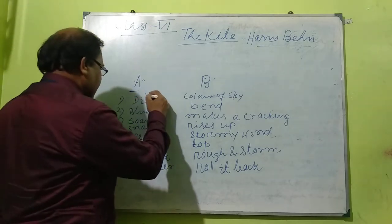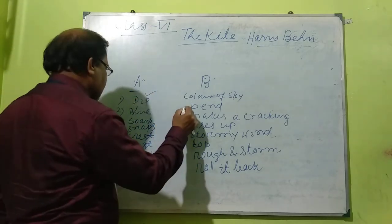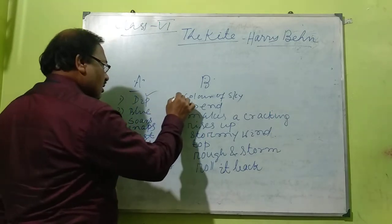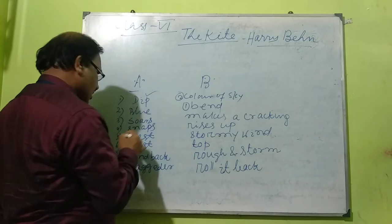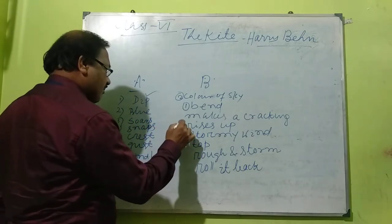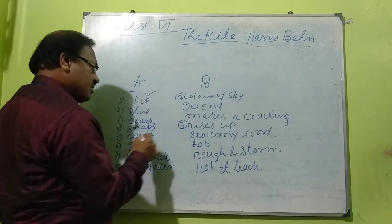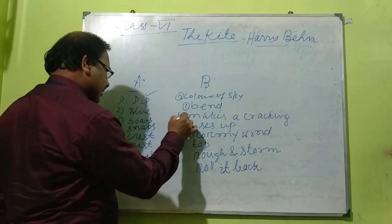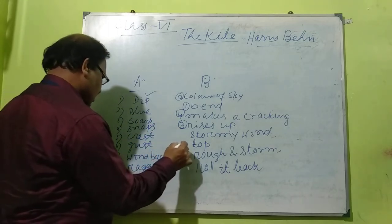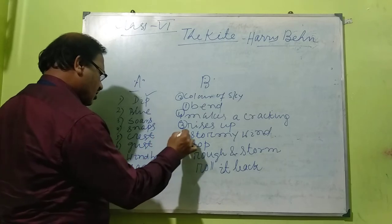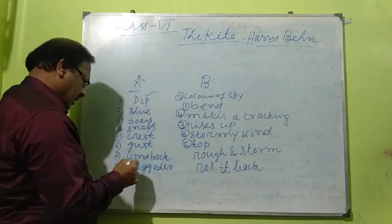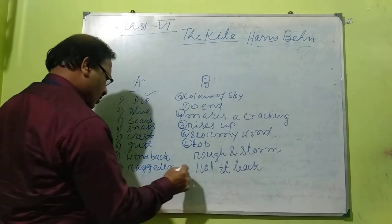For example: 'dip' matches with 'bend.' 'Blue' matches with 'color of the sky.' 'Soars' means 'rises up.' 'Snaps' means 'makes a cracking sound.' 'Crest' means 'top.' 'Gust' means 'stormy wind.' 'Wind back' means 'roll it back.'